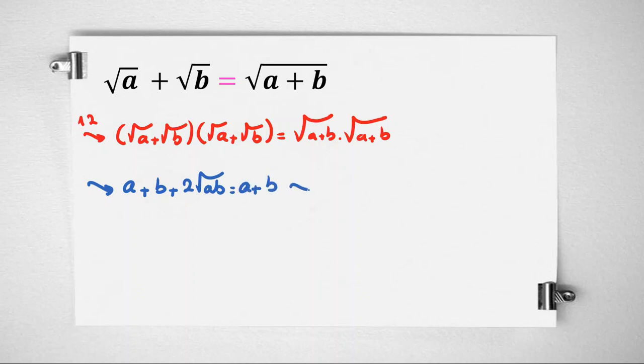Now, we can subtract a plus b from both sides, so we will reach 2 root ab equals 0, so we conclude a equals 0 or b equals 0.